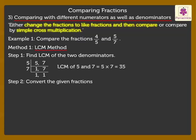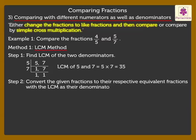Convert the given fractions to their respective equivalent fractions with the LCM as their denominators. So we multiply 4 and 5 both by 7 to get equivalent fraction as 28 upon 35. Similarly we get the other equivalent fraction as 25 upon 35. Step 3: Compare the fractions.